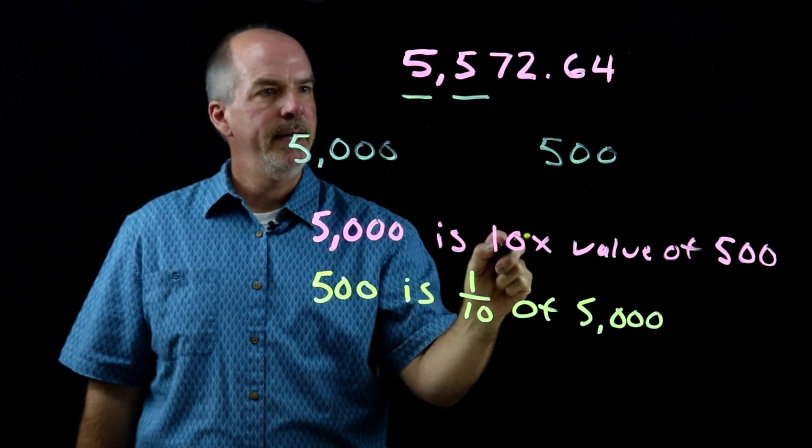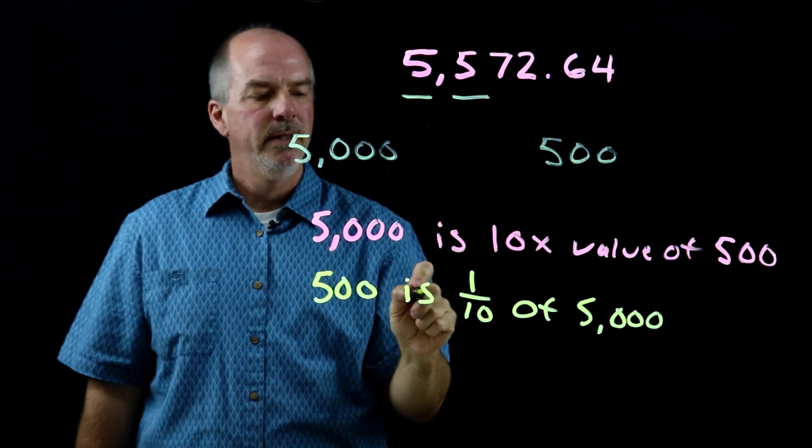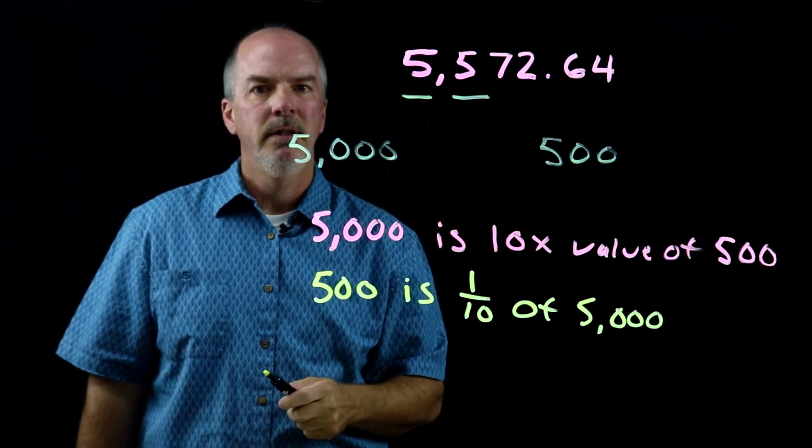I start at the place value here. I move to the left. I go up ten times. I start at the place value here. I move to the right. And the value is one-tenth of the value to the left.